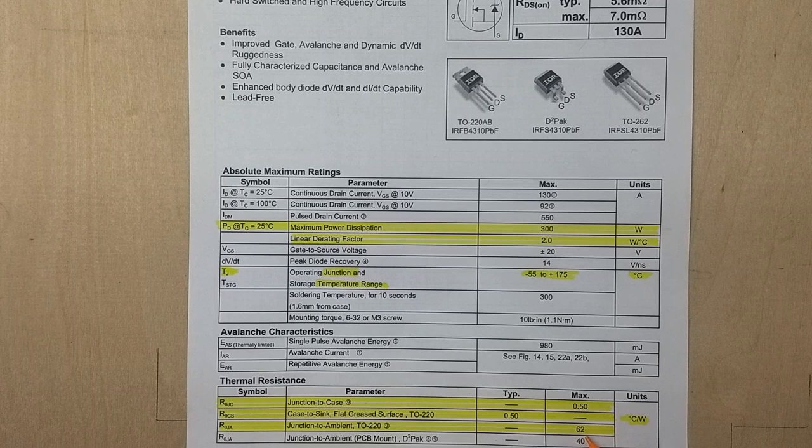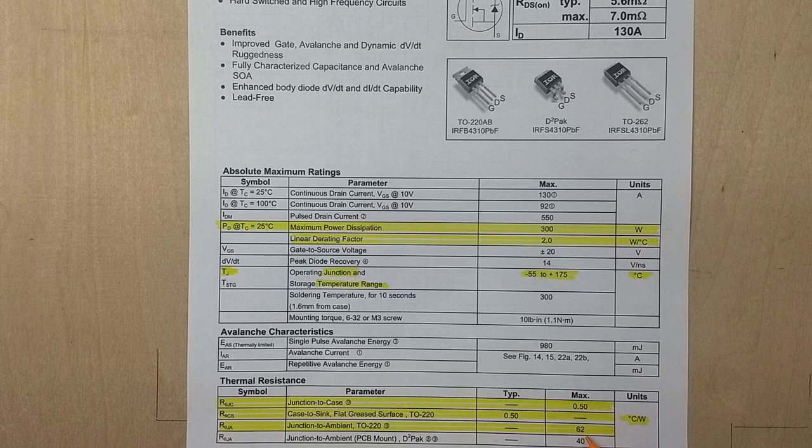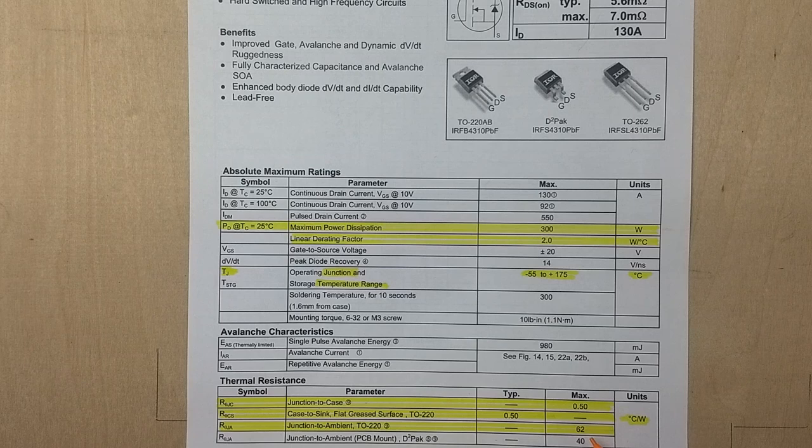Then it's also saying the junction to ambient is 62 degrees C per watt. And that's like the other transistor that we showed with a 2 watt power dissipation capability without a heat sink.